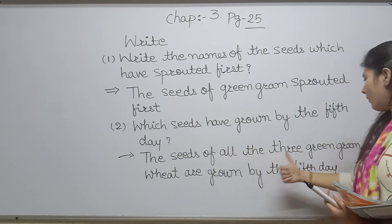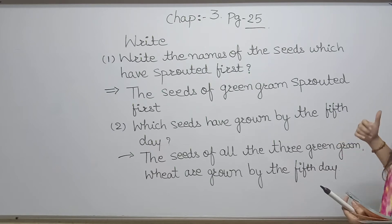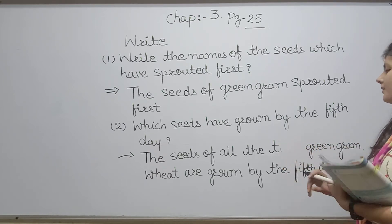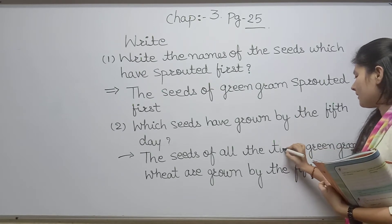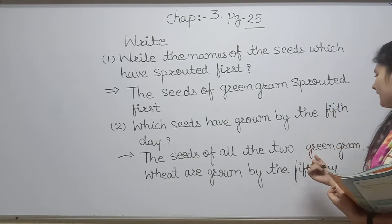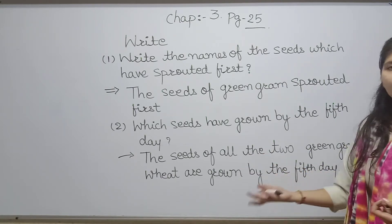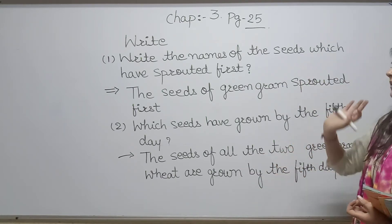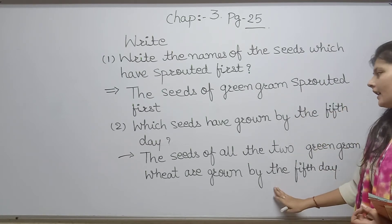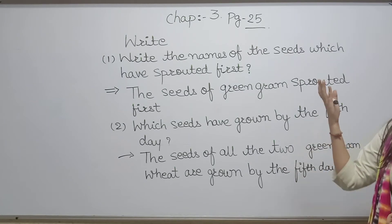The next question is: which seeds have grown by the fifth day? The answer involves two seeds — green gram and wheat. Green gram will grow in two or three days, but by the fifth day both green gram and wheat seeds are fully grown.